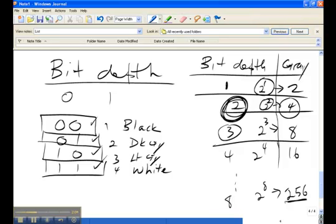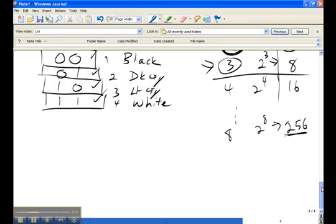So let's just go back to looking at a bit depth of 3 and the question may be asked since there are 8 different unique codes for the shades of gray.